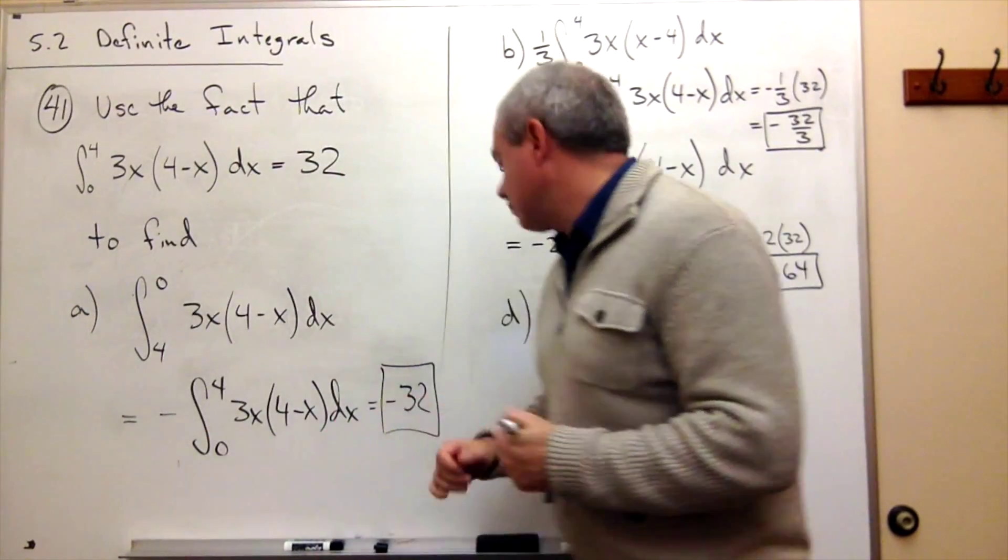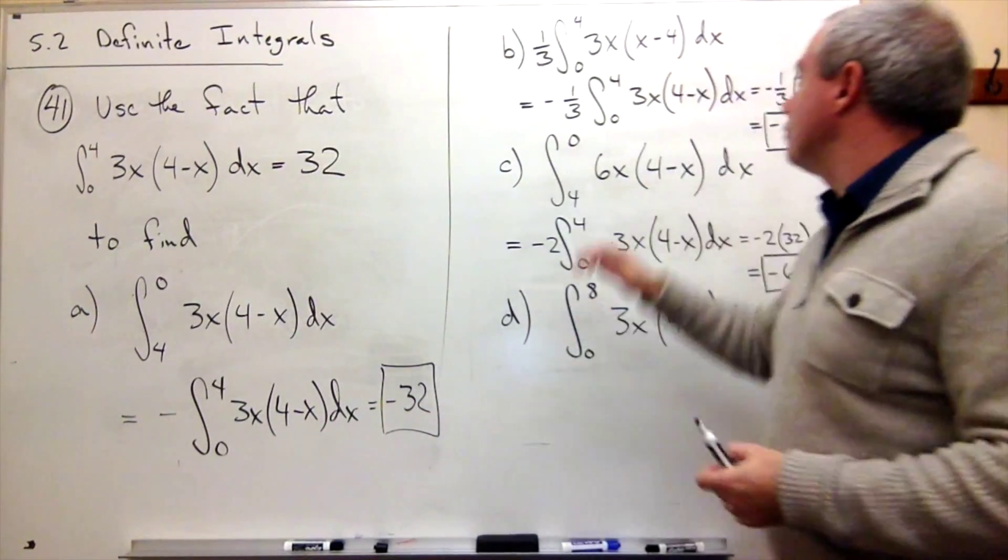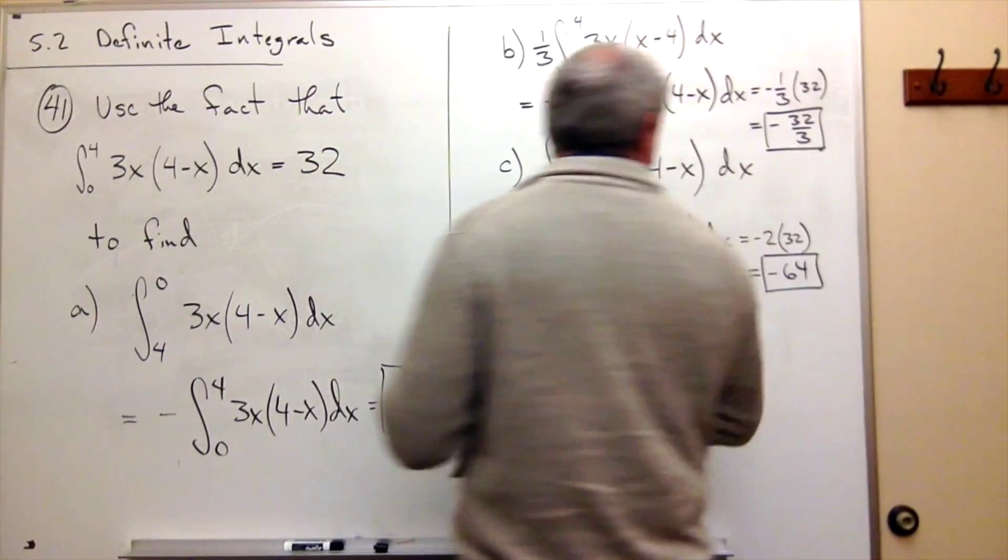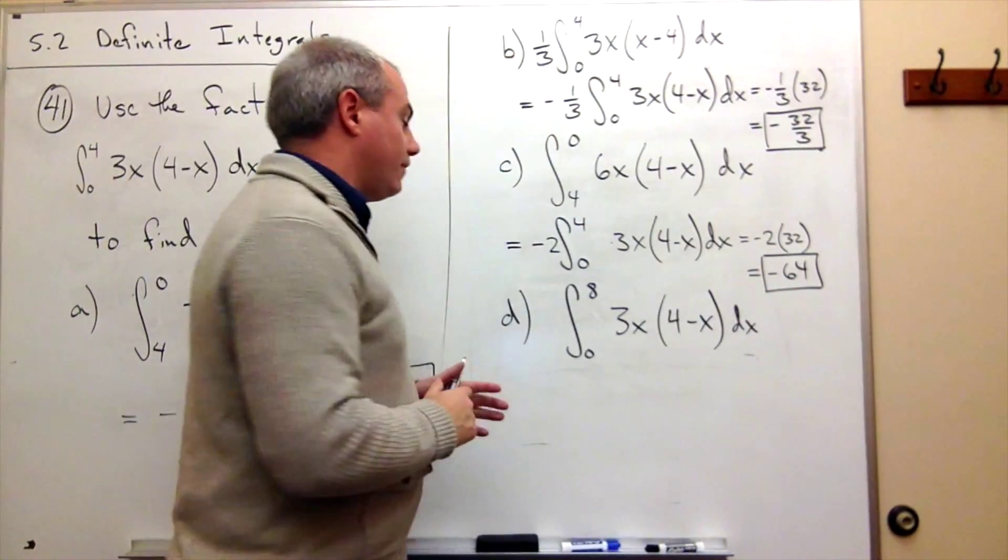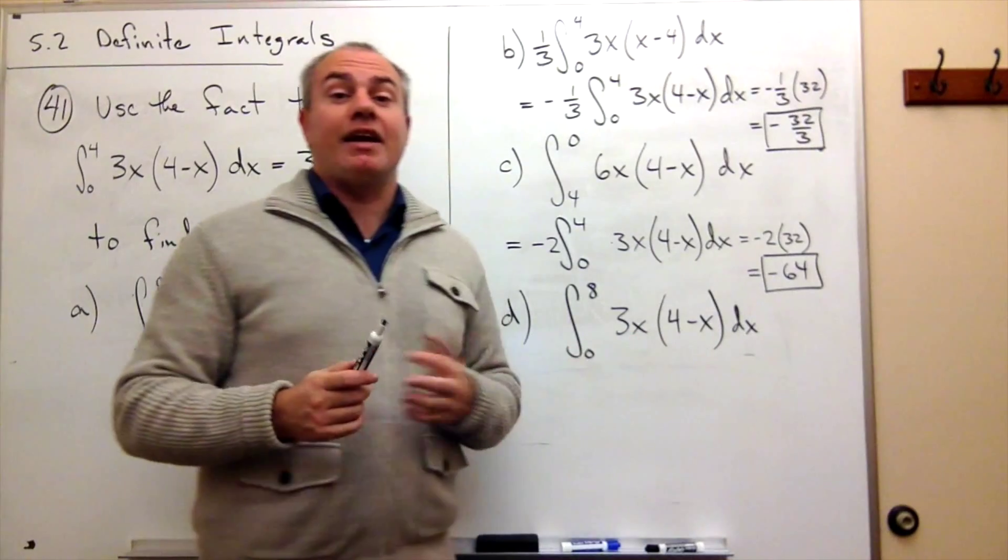So part a, the answer is negative 32. Part b, negative 32 over 3. And part c, negative 64. Part d, it can't be done.